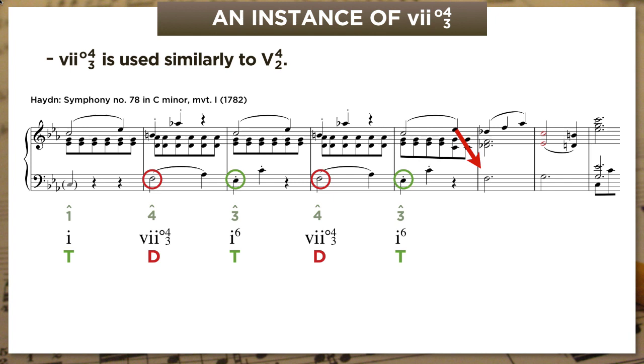And then after that, there's a standard 4-5-1 cadential formula, predominant, dominant, tonic, where the actual chords are flat 2-6, a chord we don't know yet. Then V, decorated by a cadential 6-4. And finally tonic. Have a listen.